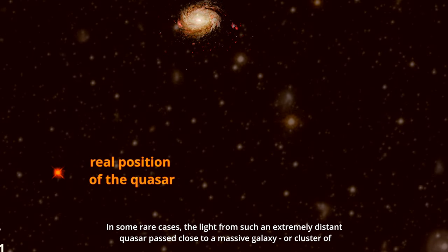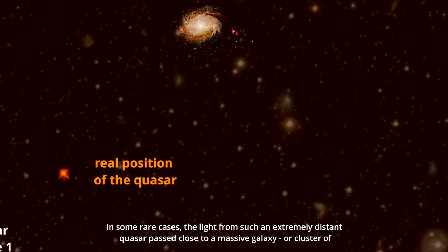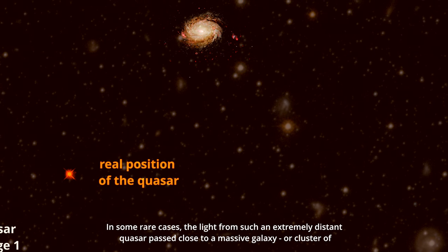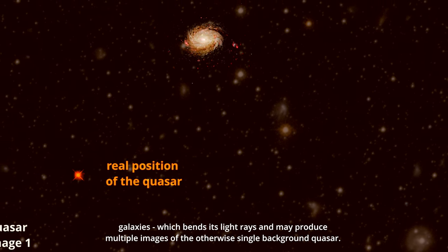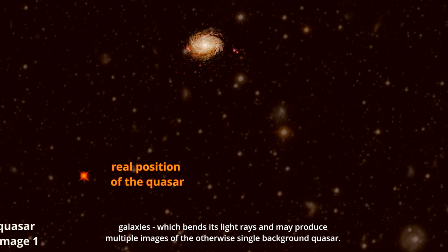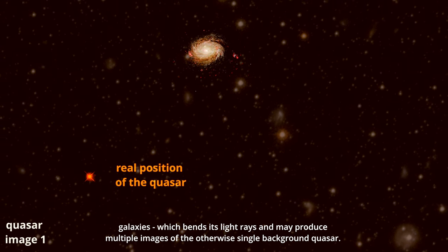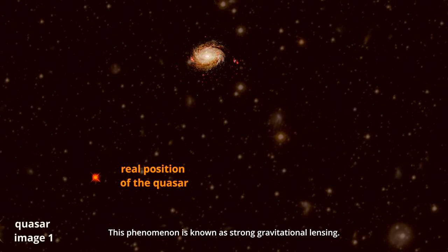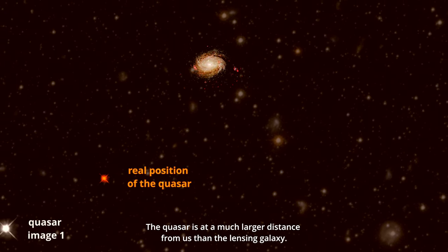In some rare cases, the light from such an extremely distant quasar passed close to a massive galaxy or cluster of galaxies, which bends its light rays and may produce multiple images of the otherwise single background quasar. This phenomenon is known as strong gravitational lensing.